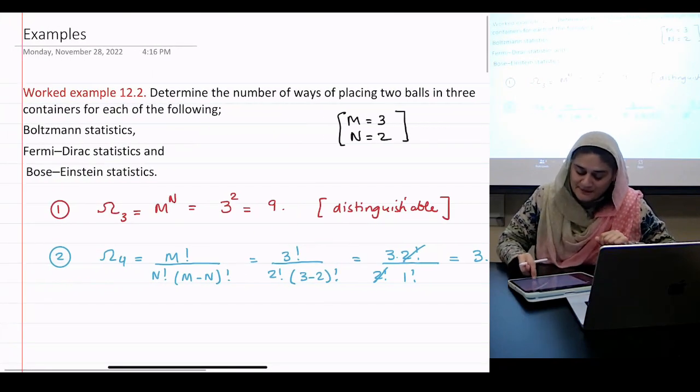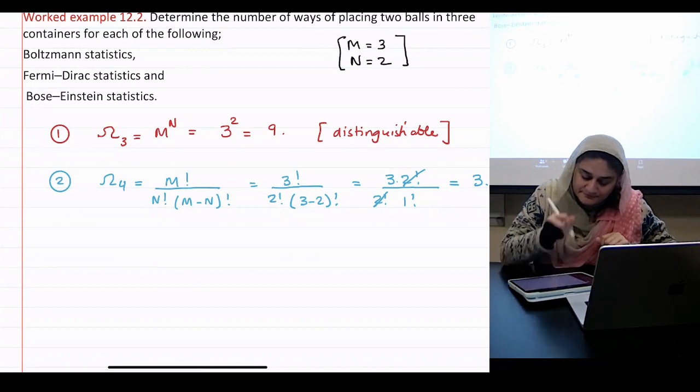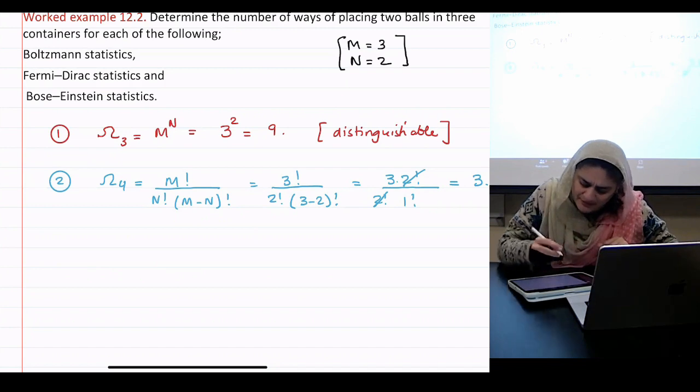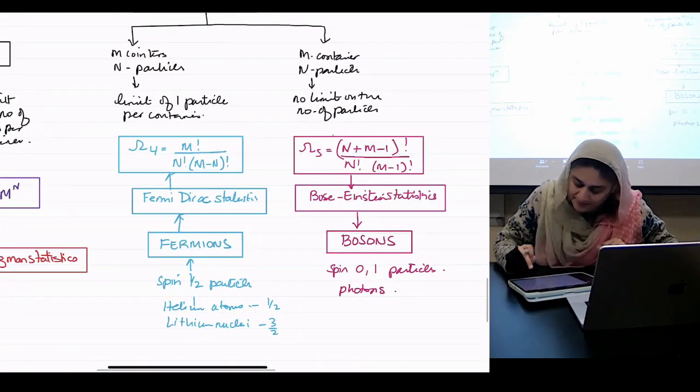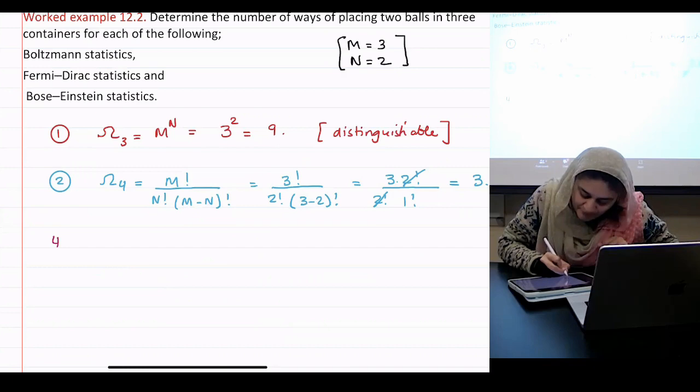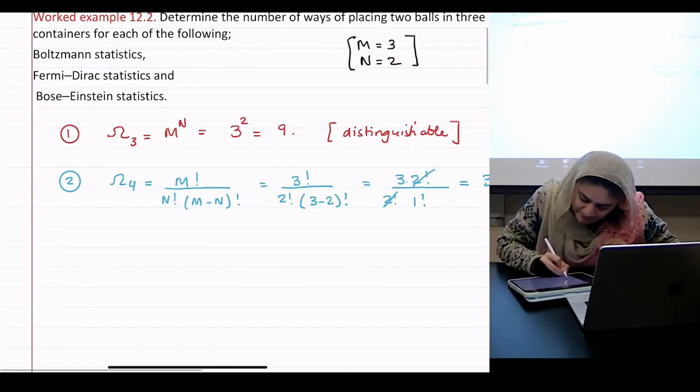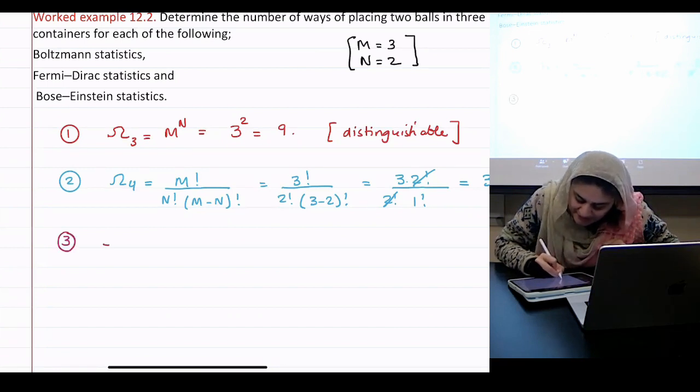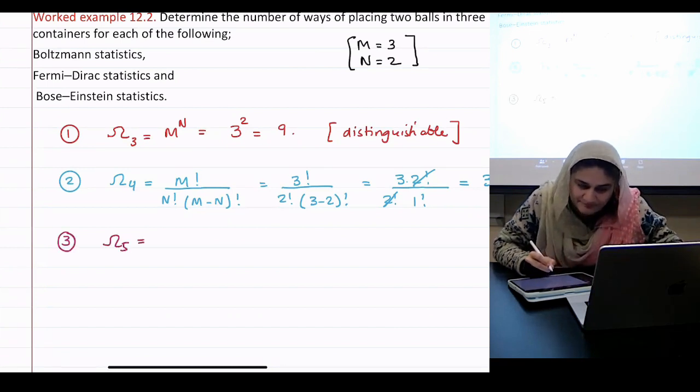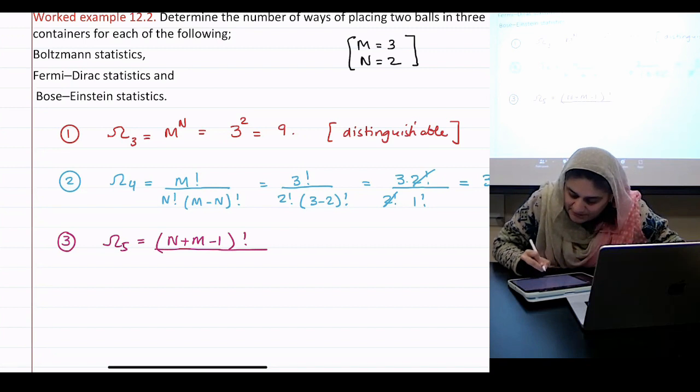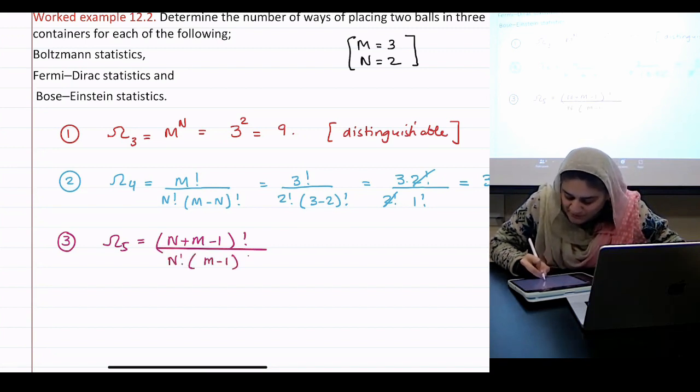Okay, last one, Bose-Einstein. What color was Bose-Einstein? I think pink, right? Is it pink? Yeah. So number three. Bose-Einstein. What was the formula? n plus m minus 1 factorial divided by n factorial m minus 1 factorial.